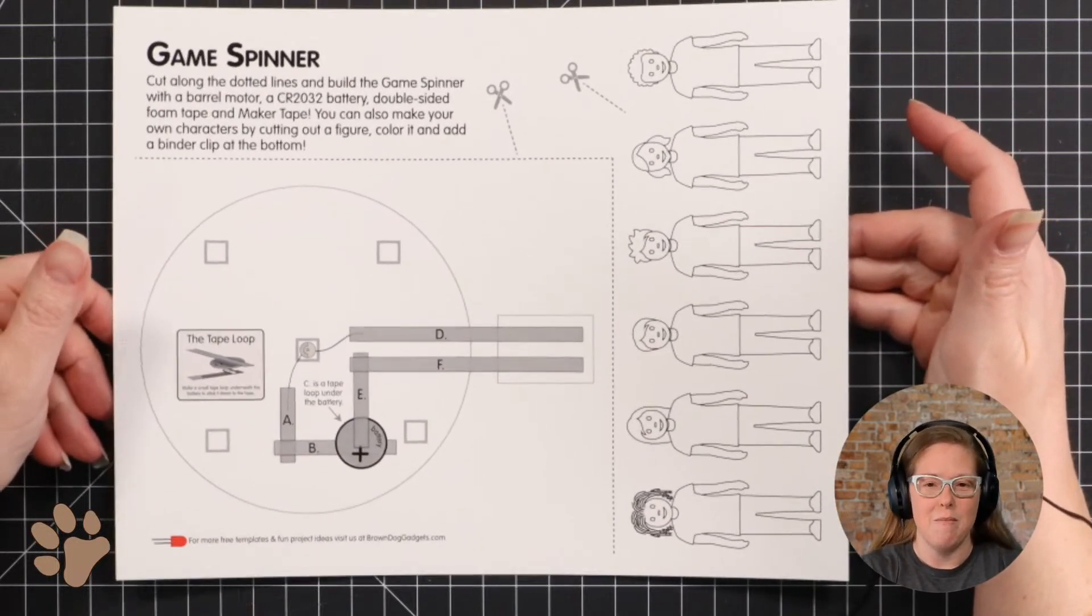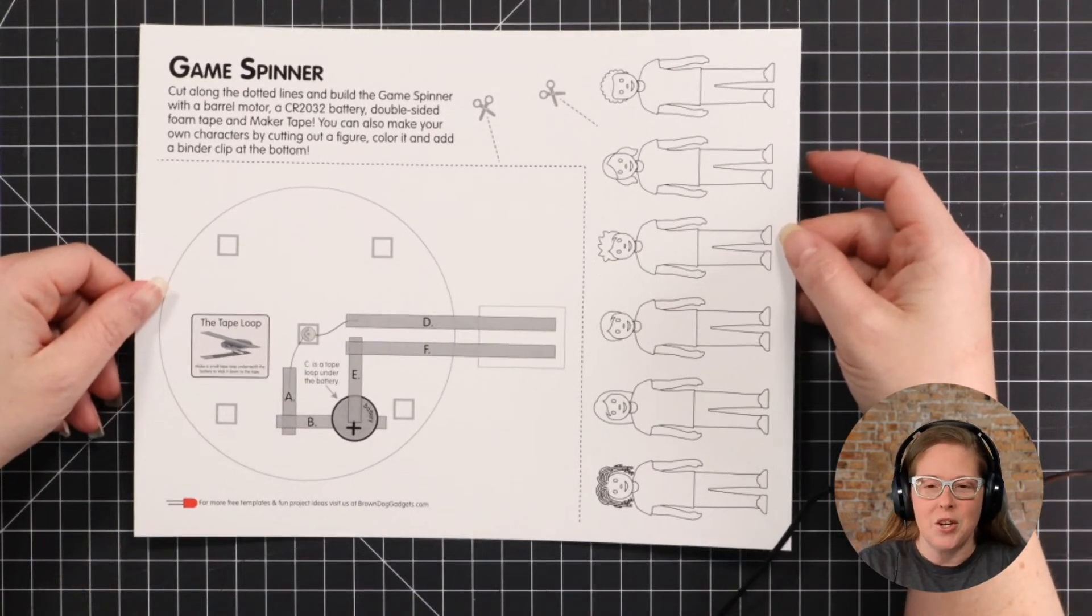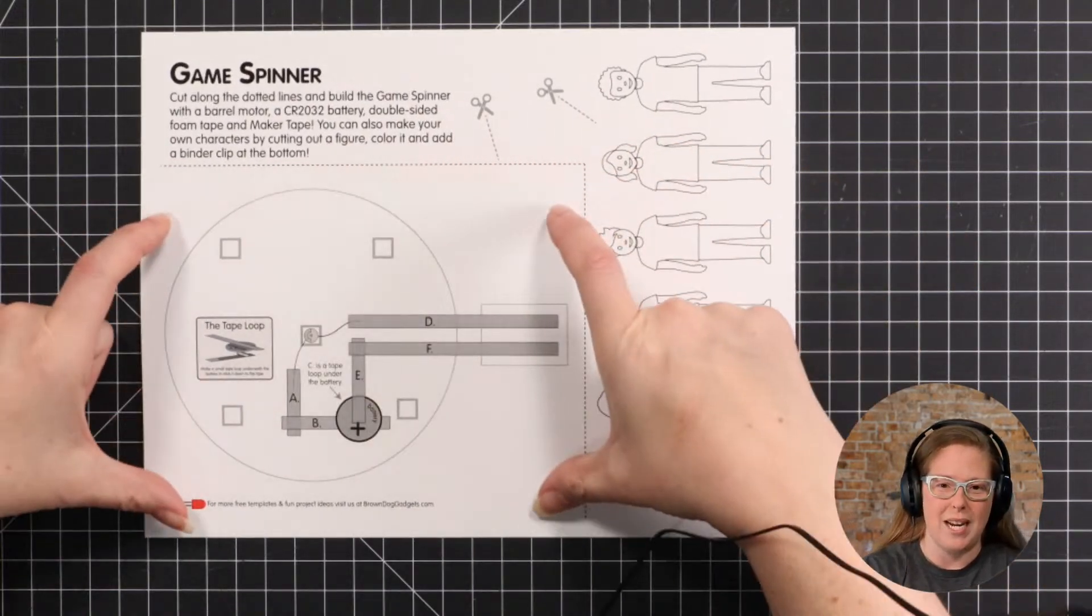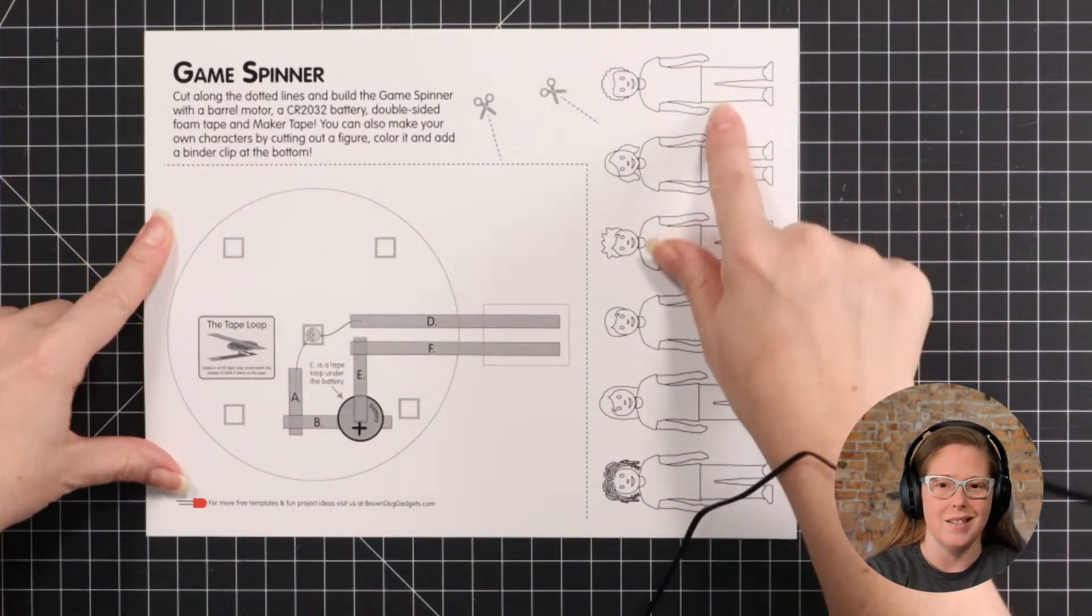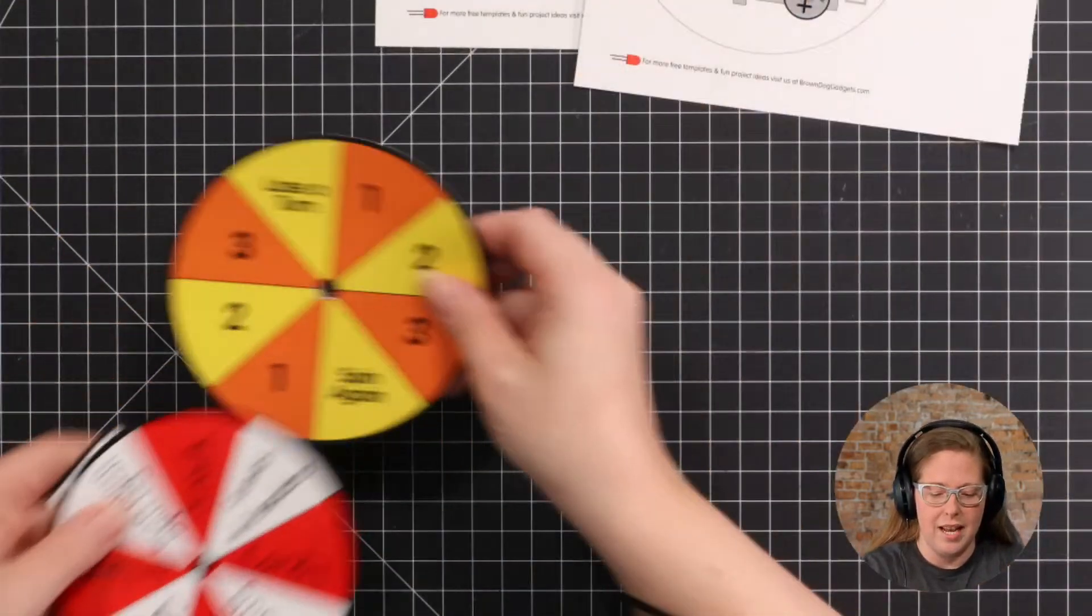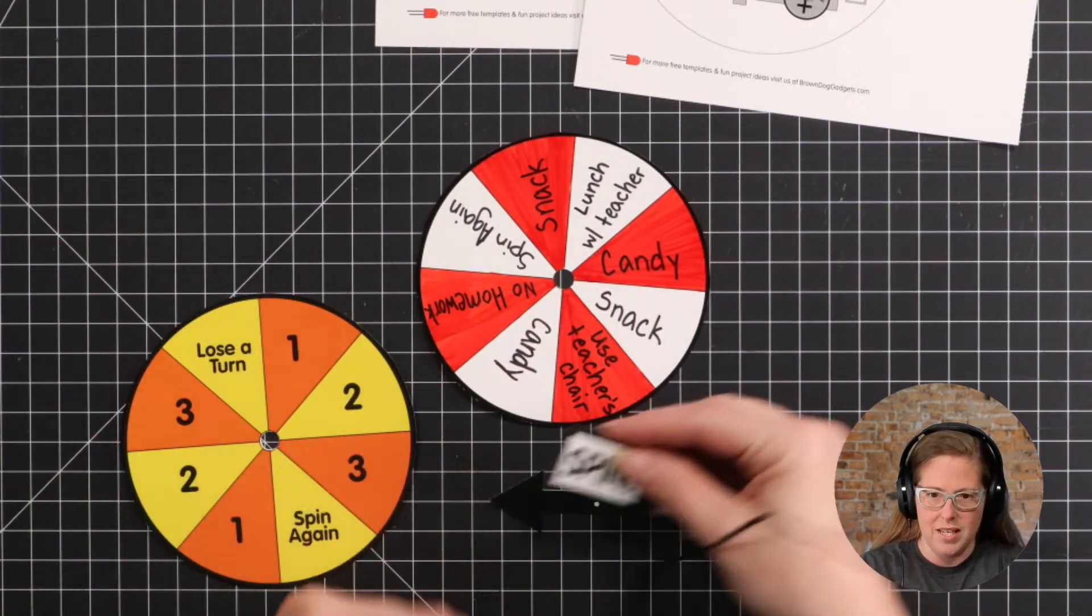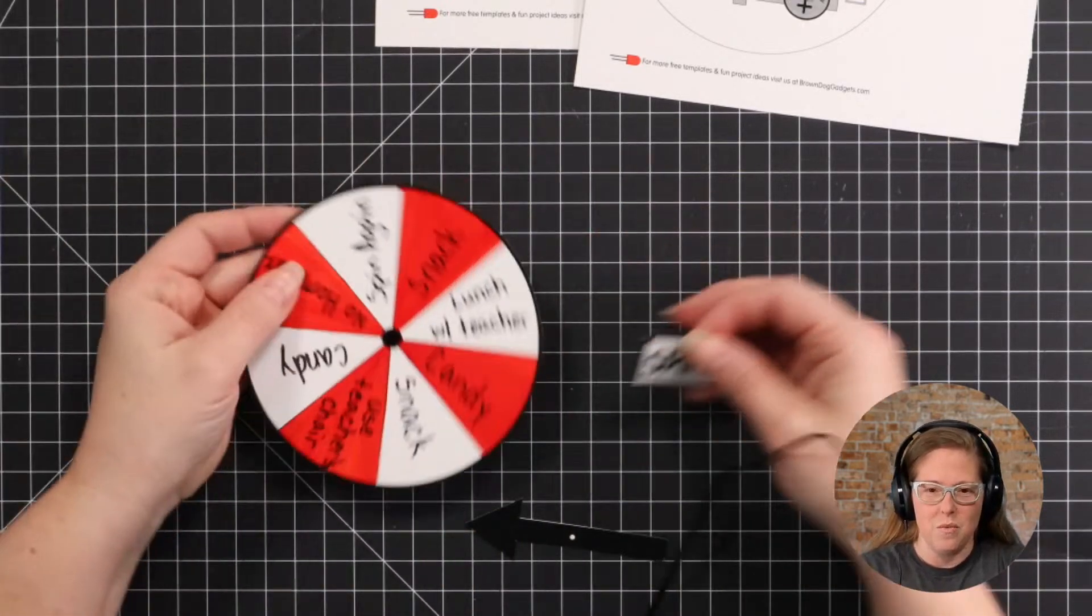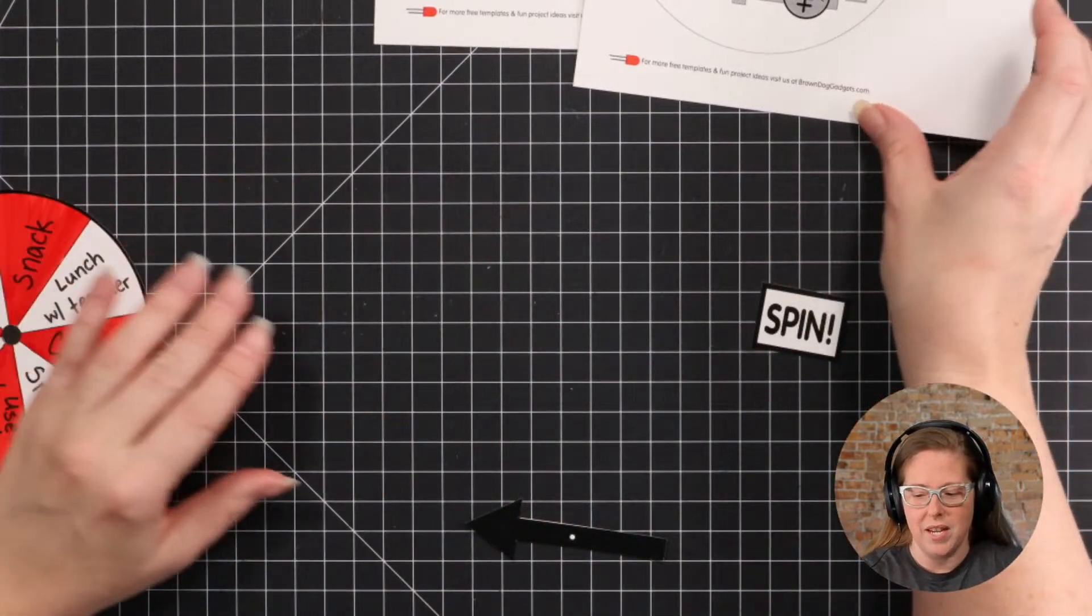This is the second page of the template. Basically, you cut out this rectangular portion here and your whole game spinner fits on there. I'll talk about these towards the end. So on that first page, it has the colored in version, the black and white version, an arrow and a spin button. We're going to create the prize wheel.